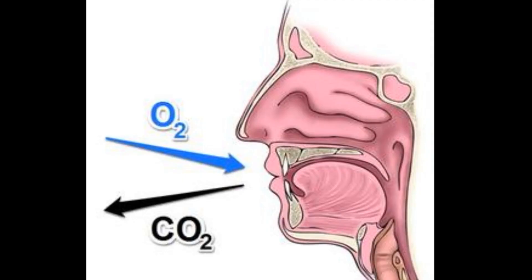Animals breathe in oxygen and give out carbon dioxide. Plants use carbon dioxide and give out oxygen during the daytime. This way, plants and animals help each other.